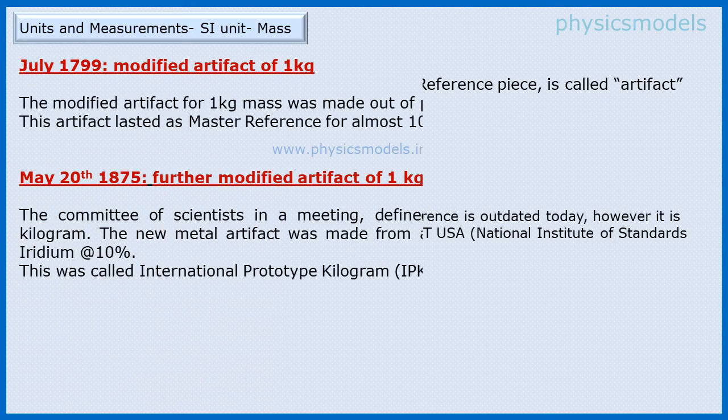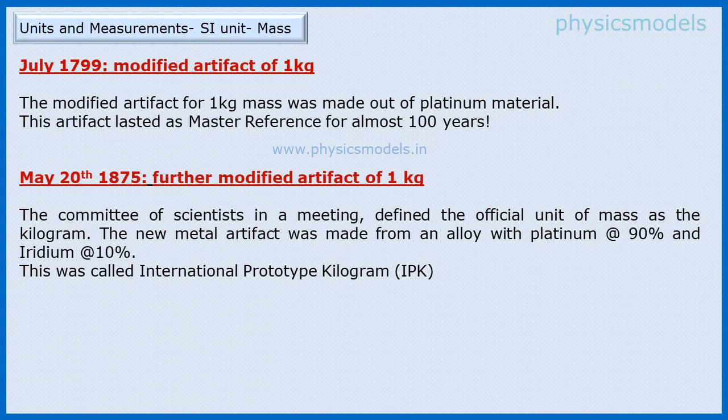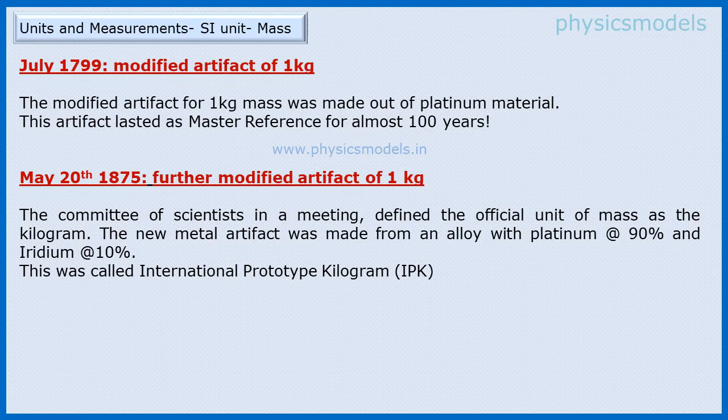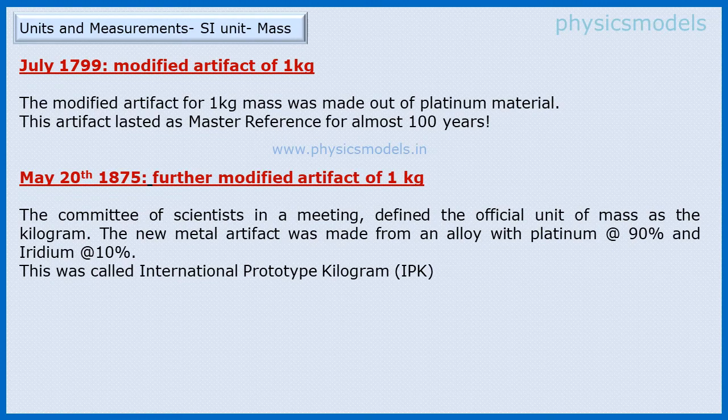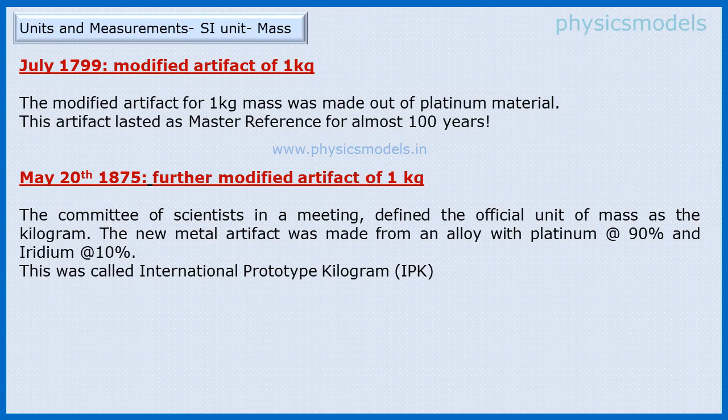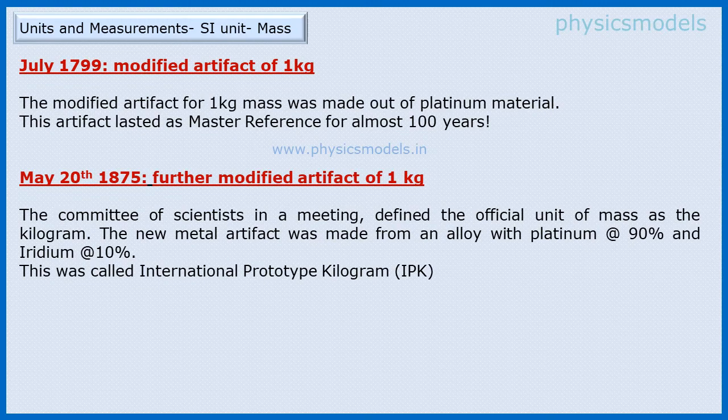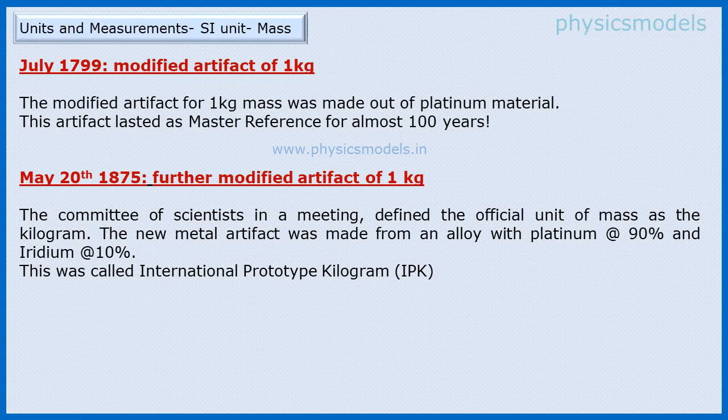In 1799, the artifact got modified to platinum material. There was no other change in the concept of having a physical prototype, and this platinum prototype lasted for almost 100 years as the international reference. On May 20th 1875, scientists changed the material to an alloy of 90% platinum and 10% iridium. This piece was called the International Prototype Kilogram.